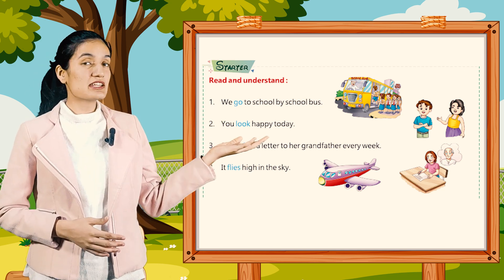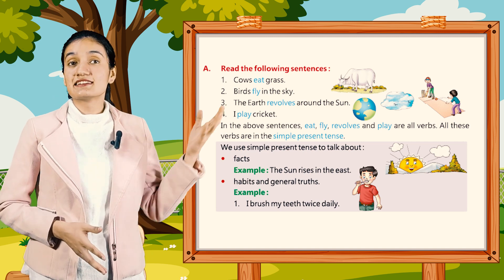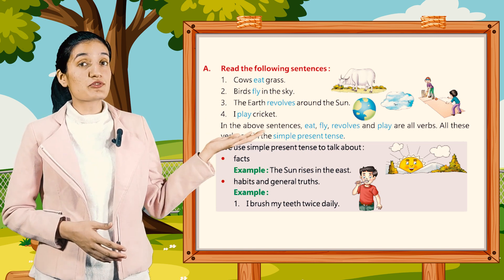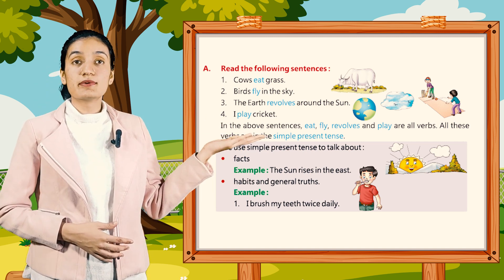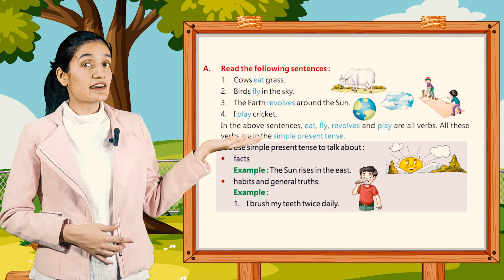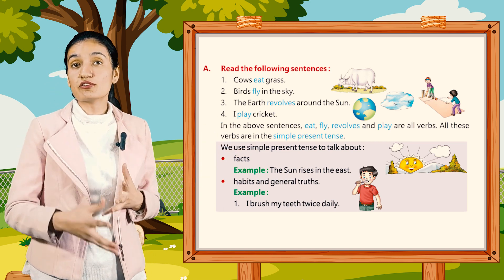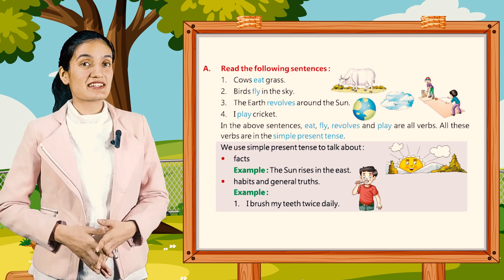Now let's begin with Part A. Read the following sentences. First, cows eat grass. Second, birds fly in the sky. The earth revolves around the sun. I play cricket.